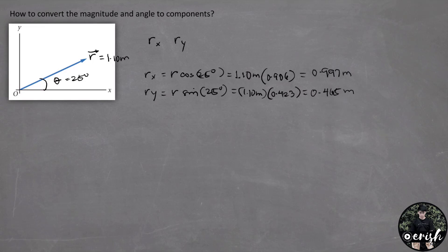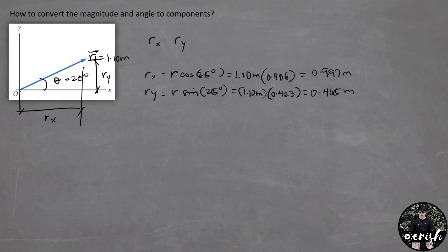The Rx and Ry components are shown in the figure — this is the Ry and this is the Rx. Sometimes we are given the components of a vector — Rx and Ry — and from them we would like to find the corresponding magnitude and direction, the vice versa. So, how do we convert the components to magnitude and direction?